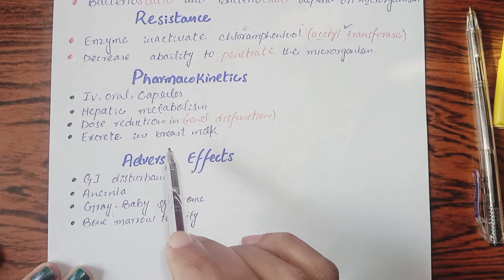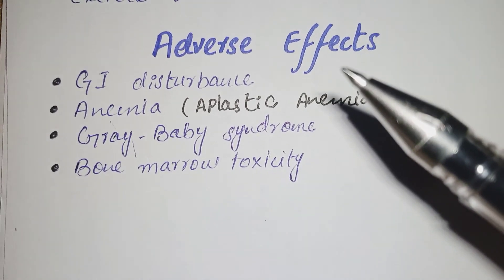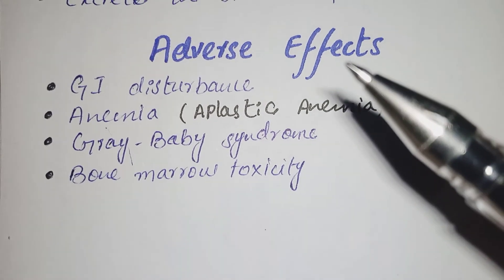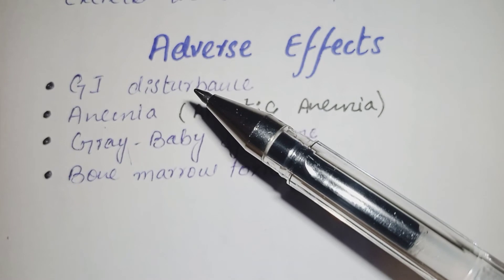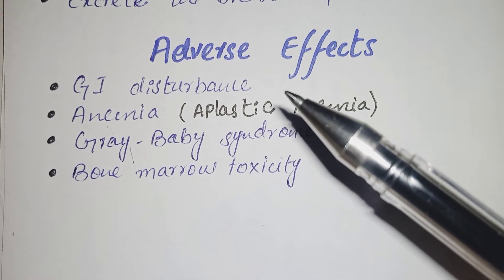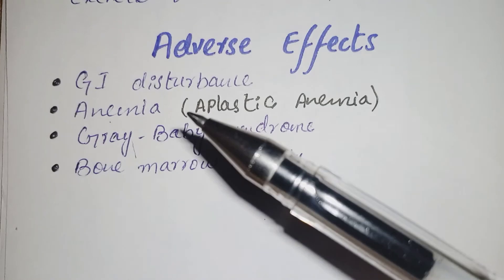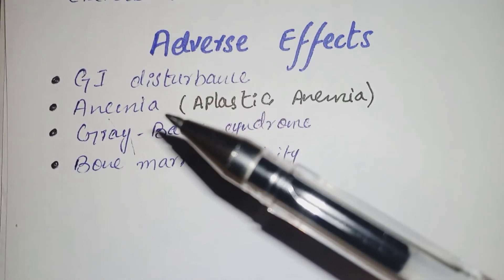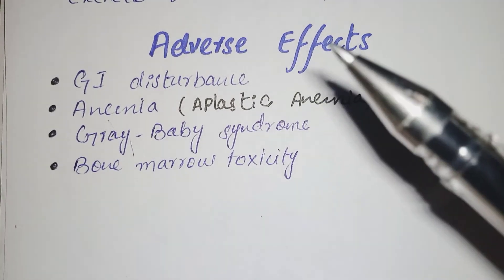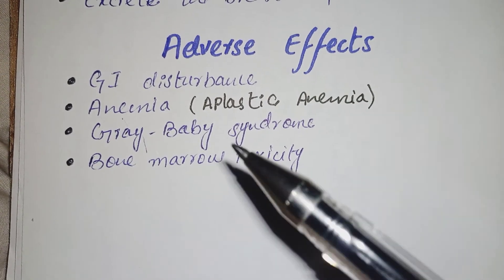Chloramphenicol is excreted in breast milk, so it should be avoided in pregnant and lactating mothers. Regarding adverse effects: the first is gastrointestinal disturbance, as oral drugs can cause GI irritation. The second is anemia — bone marrow problems reduce red blood cell production, causing aplastic anemia, which is another adverse effect of chloramphenicol.